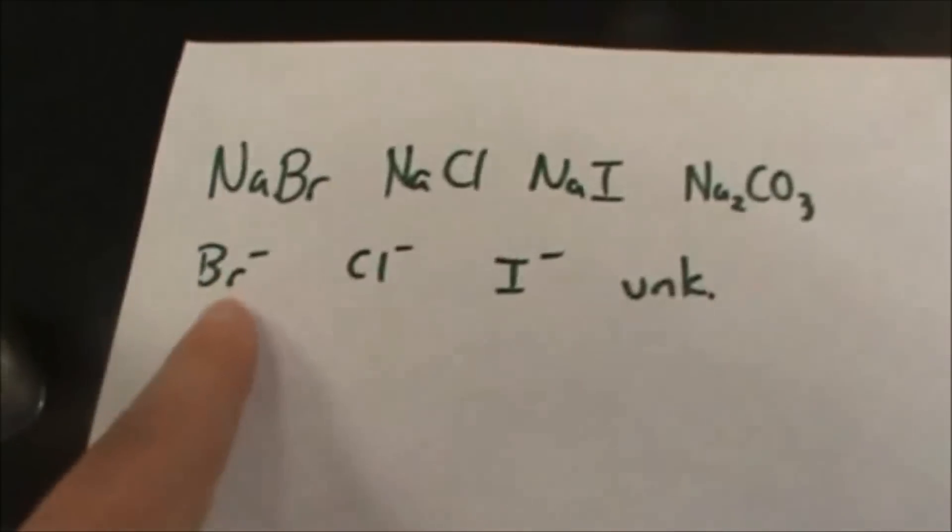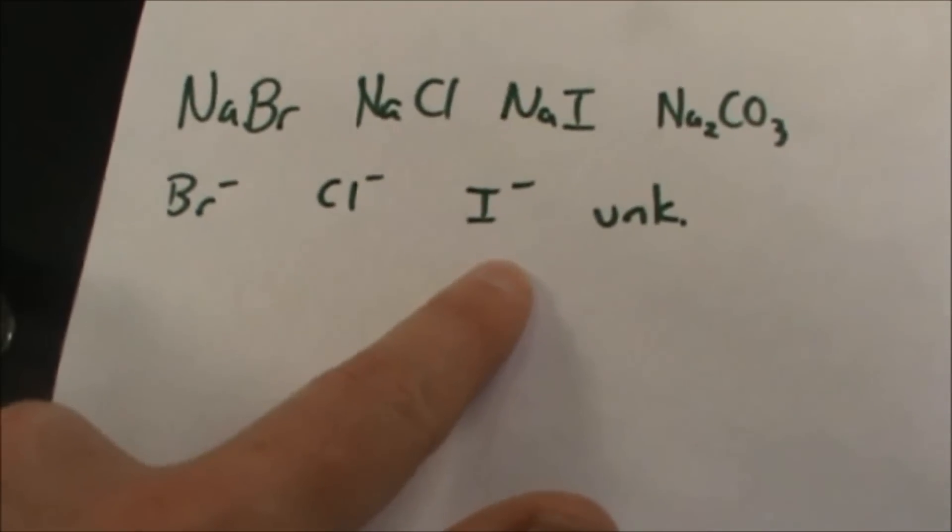So my precipitate here is different than those three. So then I would go on to my next anion test after I've confirmed that. If this were the same as one of those three, then I would know whether I had a bromide, a chloride, or an iodide.